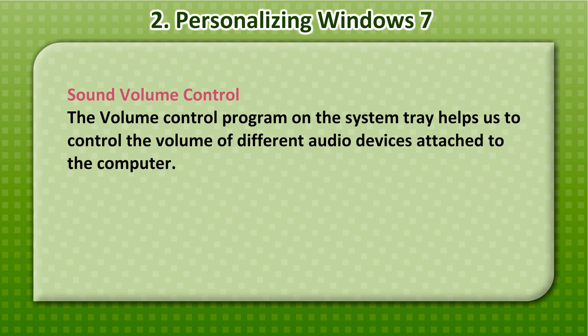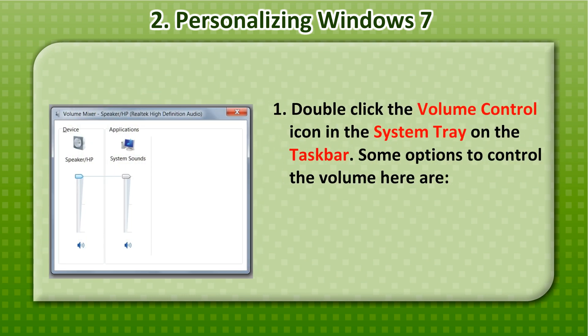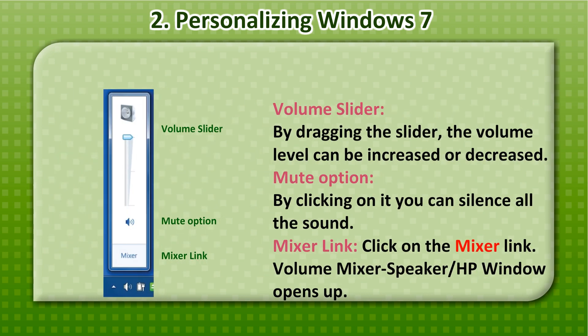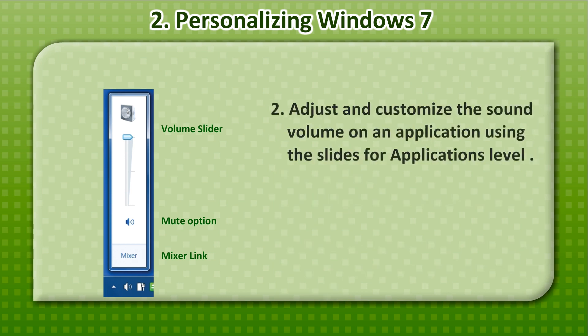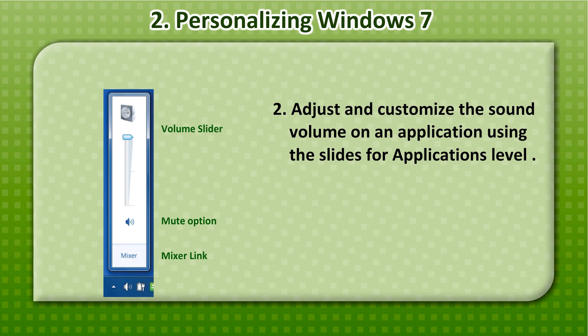Sound Volume Control: The Volume Control program on the system tray helps us to control the volume of different audio devices attached to the computer. 1. Double-click the volume control icon in the system tray on the taskbar. Options to control the volume are: Volume Slider — by dragging the slider, the volume level can be increased or decreased. Mute option — by clicking on it, you can silence all the sound. Mixer link — click on the Mixer link and the Volume Mixer window opens up.